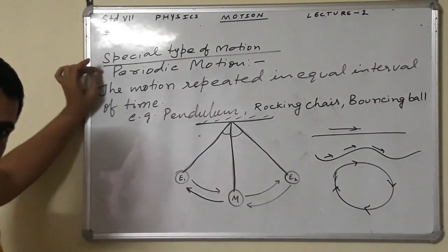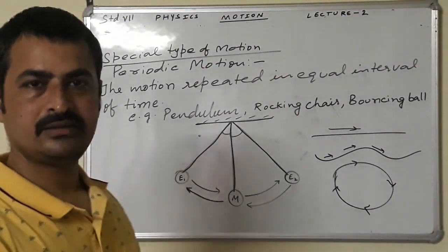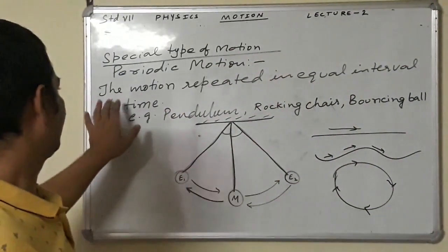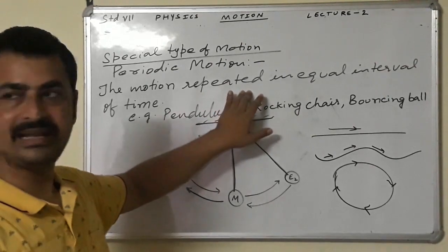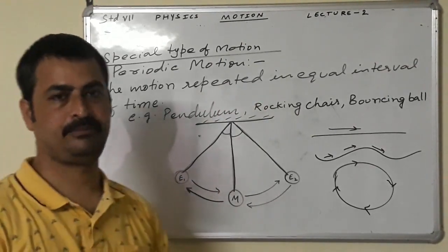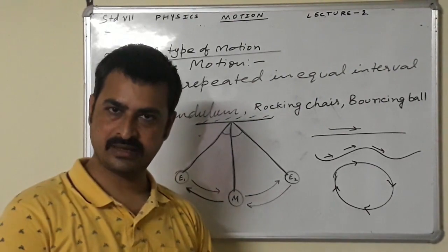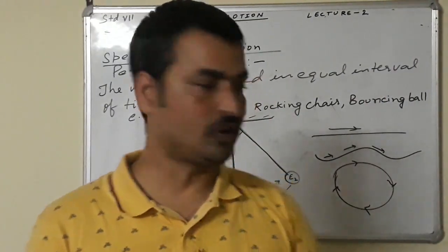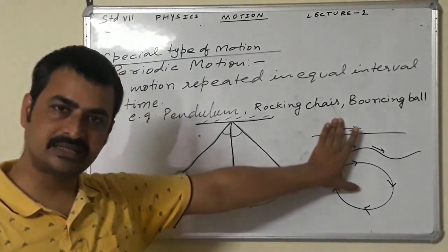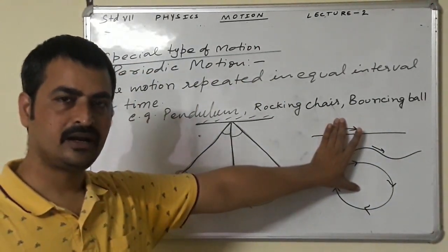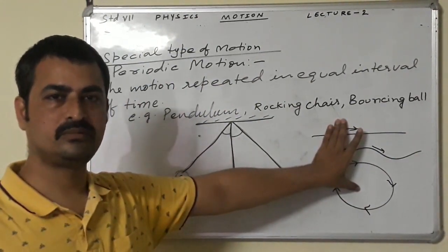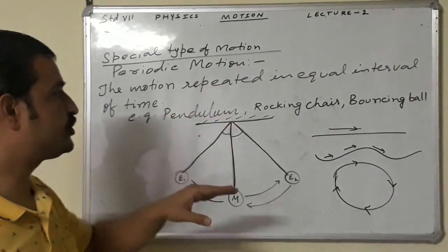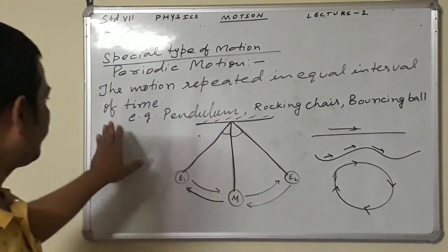In circular motion, direction is changing at each and every step. One more type of motion is periodic motion. Periodic motion means the motion which repeats itself — the motion repeated in equal intervals of time. If any motion is repeating itself, other than these three path-based types, it is this special type called periodic motion.